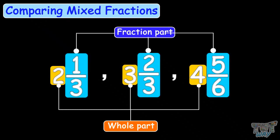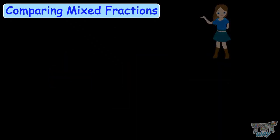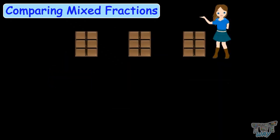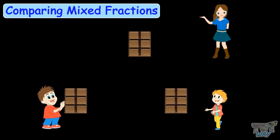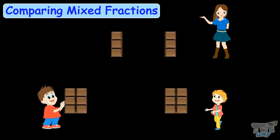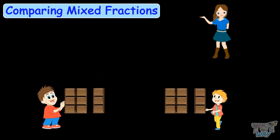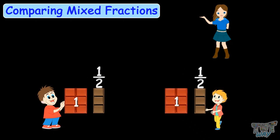Now let's see how we can compare these. I have three chocolates to distribute between two children. So I will give one chocolate to each child, and then give a half chocolate to each child. So each child's share is 1 and 1 by 2. These are mixed fractions or mixed numbers — they have a whole part, 1, and a fraction part, 1 by 2. And these mixed numbers are equal, having the same whole part as well as the same fraction part.